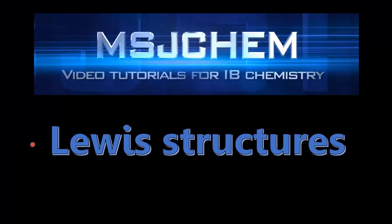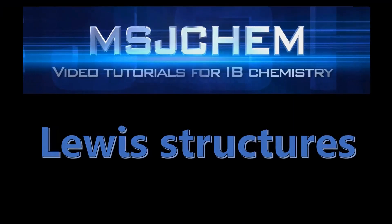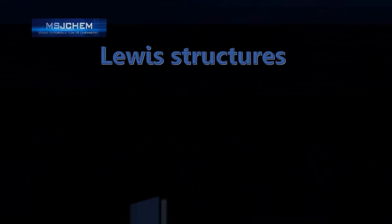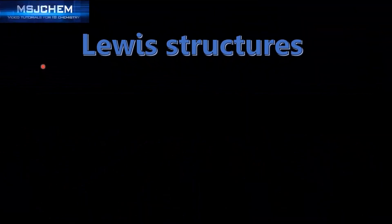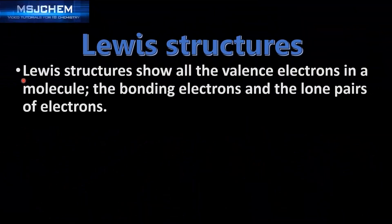This is MSJChem and in this video we're going to look at Lewis structures. Lewis structures show all the valence electrons in a molecule — both the bonding electrons and the lone pairs of electrons.